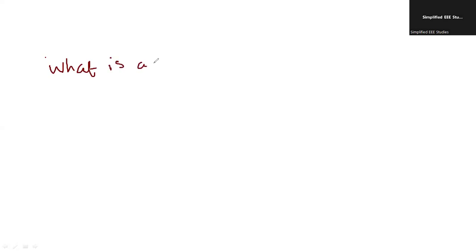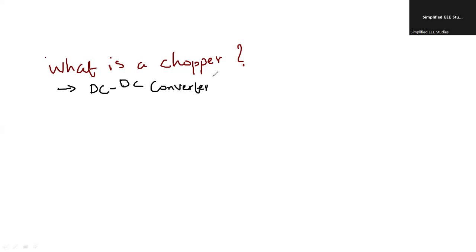What is a DC-DC chopper? The chopper is also known as a DC-DC converter. It is a static device — static in the sense there is no moving part.